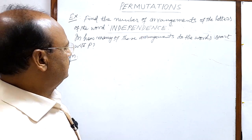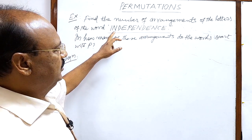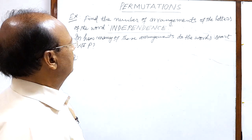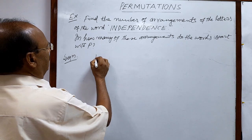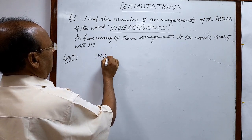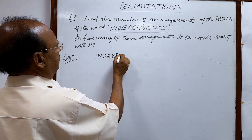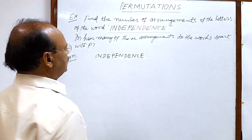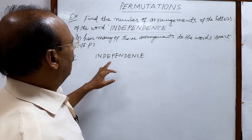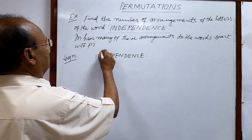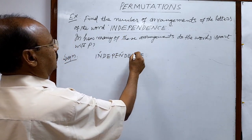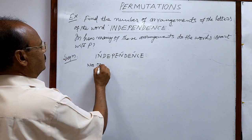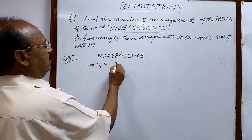Here the word INDEPENDENCE — you see some of the letters are alike. For example, in the word INDEPENDENCE, how many N's do we have? There are 3 N's.